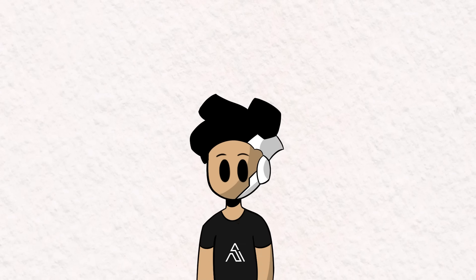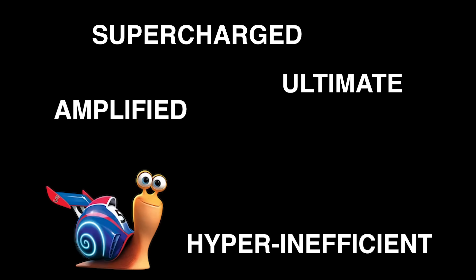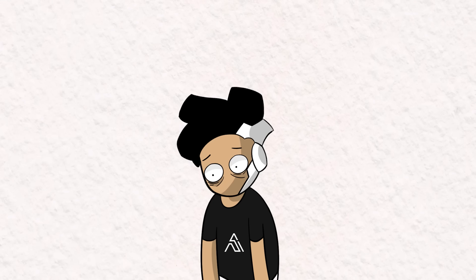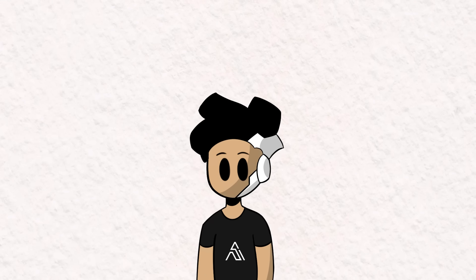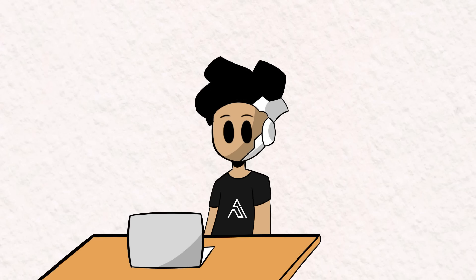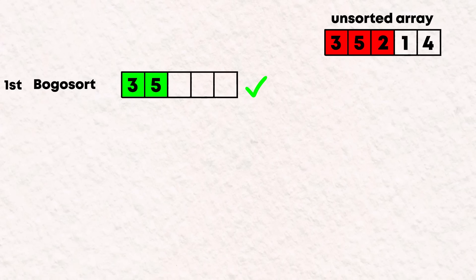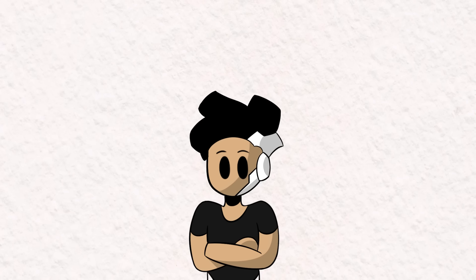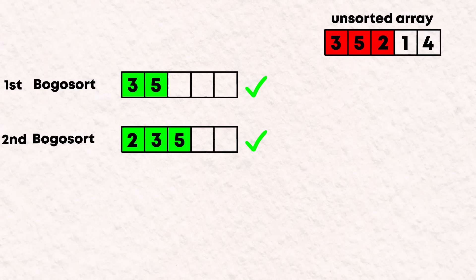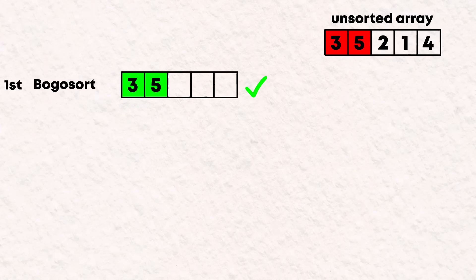Number 6, Bogobogosort. Bogobogosort is basically the ultimate supercharged hyper-inefficient turbo-amplified recursive version of Bogosort. This sorting algorithm is so bad that it won't sort any sizable list before the heat death of the universe. Bogobogosort works by bogosorting larger and larger subsets of the dataset until the dataset itself is sorted. First, it takes the first two elements and bogosorts them. Next, it takes the first three elements and bogosorts them, and so on. But if at any point the data being sorted is out of order, it starts all over from the very beginning by bogosorting the first two elements again.